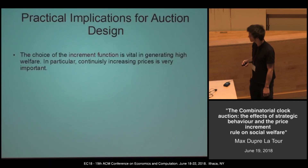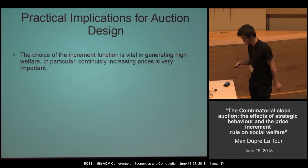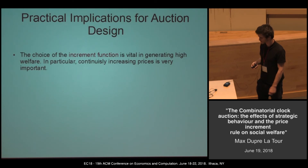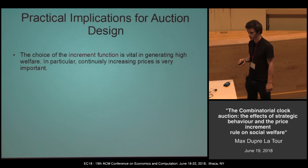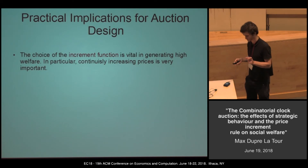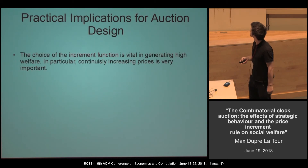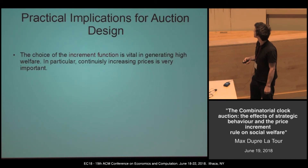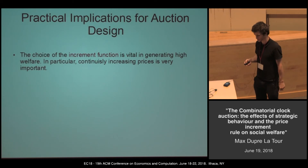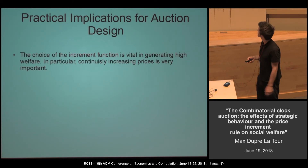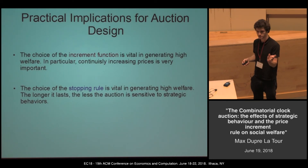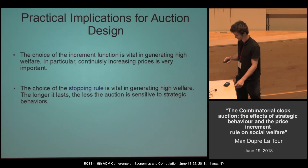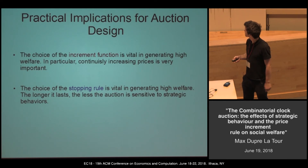The practical conclusions are: first, the choice of the increment rule is crucial — if we want to achieve good welfare, we may want to increment even if the demand is just one with no excess demand. Second, the stopping rule is really important: the longer the auction lasts, the less sensitive the auction is to strategic behavior. Thank you.